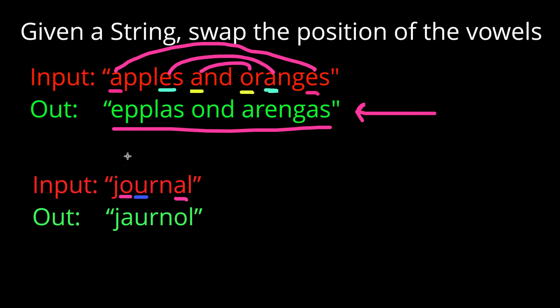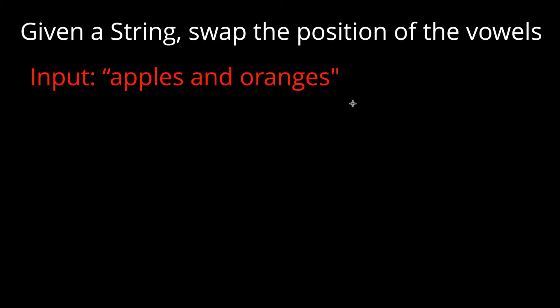In this situation we have an odd number of vowels, so the U has nothing to swap with. Therefore the U in 'oranges' stays in the same location while the A and the O end up swapping. Take a minute, pause the video, and see if you can come up with a solution to solve this problem on your own.